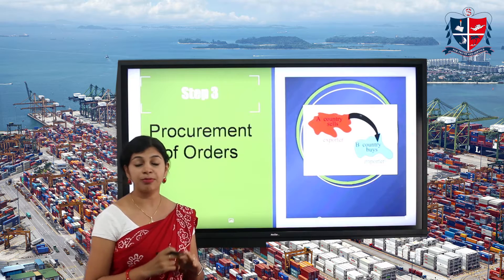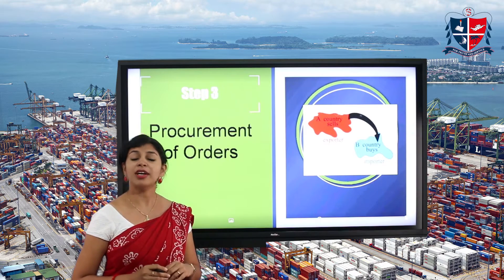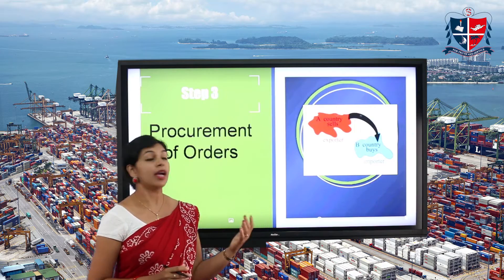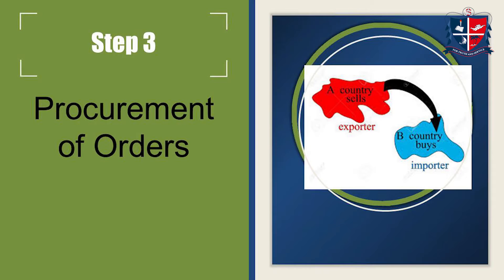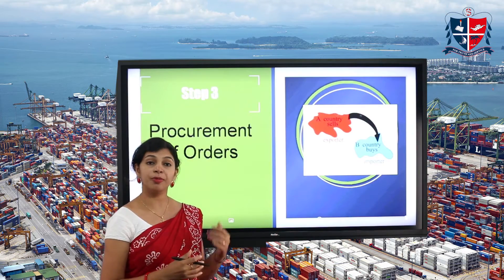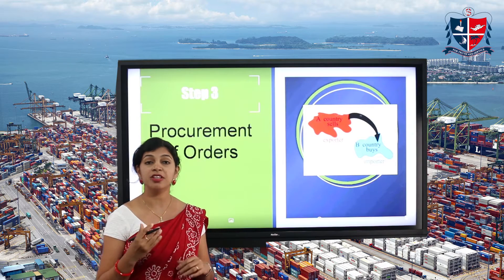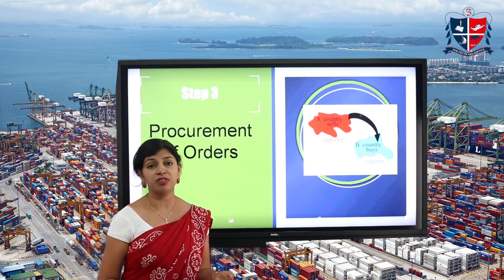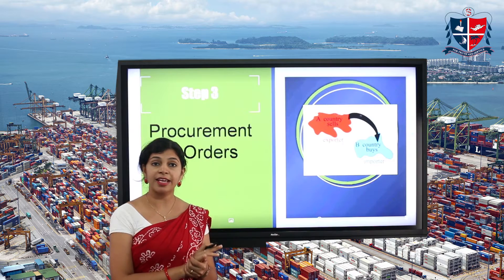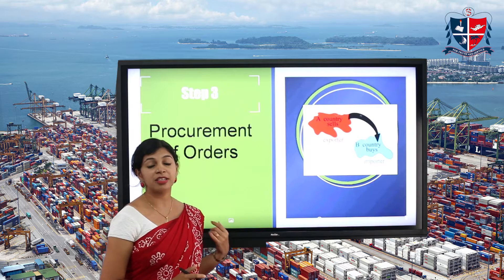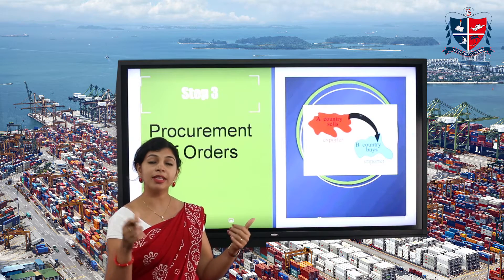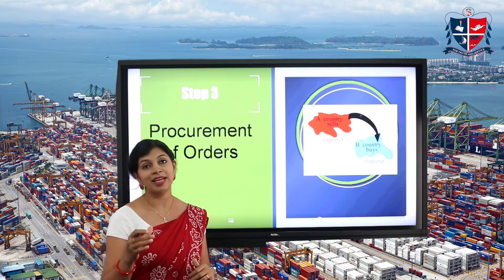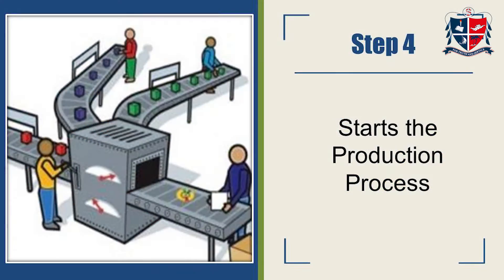Now it's time to procure orders. You have to find an importer abroad, send them samples of your goods, and then negotiate with them. In this step, you find a buyer for your product and reach a final deal after negotiating on documents, pricing, freight charges, and so on. Once the importer has agreed on all terms and conditions, both the exporter and importer come to a deal which is called an international trade agreement.